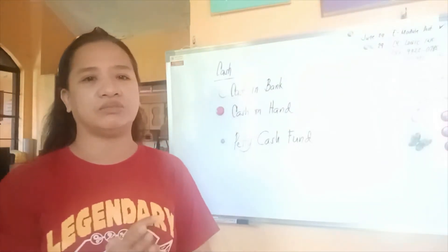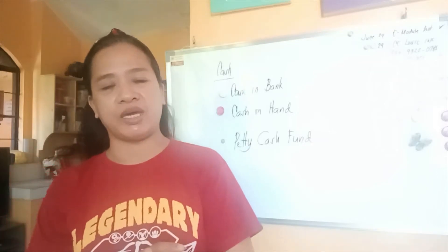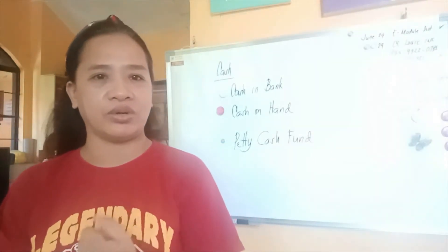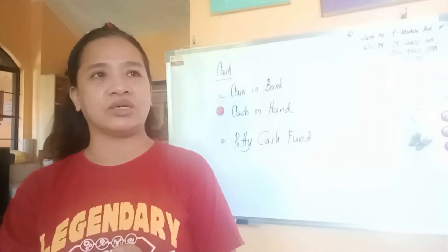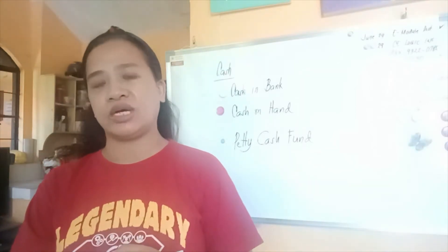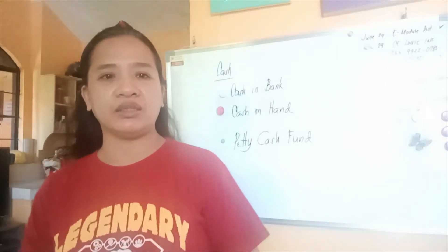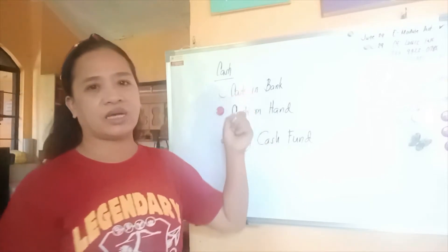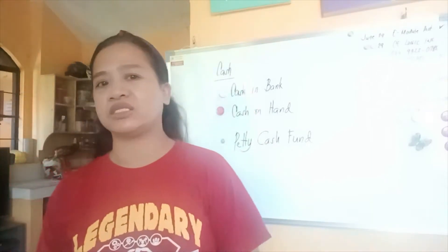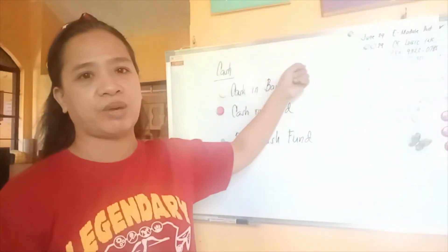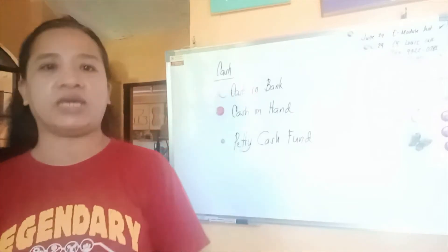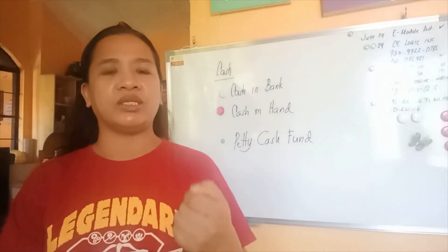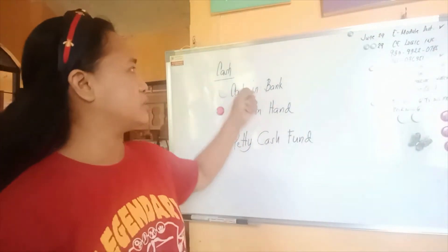When talking about cash in bank, it is when we are purchasing, paying, or receiving something. If the amount is $1,000 or more, we need to use a checking account, so it should be recorded under cash in bank. For example, if we want to purchase equipment, we debit office equipment or machineries and credit cash in bank. If the amount is $265,000, we debit equipment $265,000 and credit cash in bank. Any payment or purchase of $1,000 or more uses cash in bank.